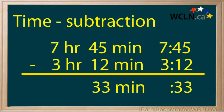Now you will deal with the hours. 7 hours minus 3 hours is 4 hours. So 7 hours 45 minutes minus 3 hours 12 minutes is 4 hours 33 minutes.